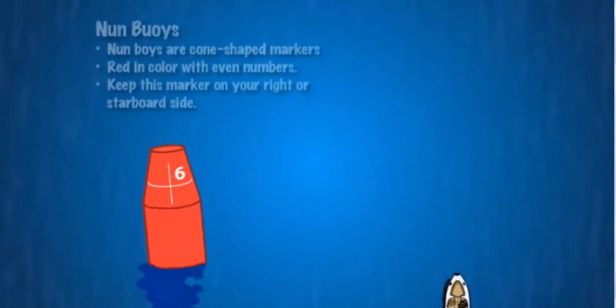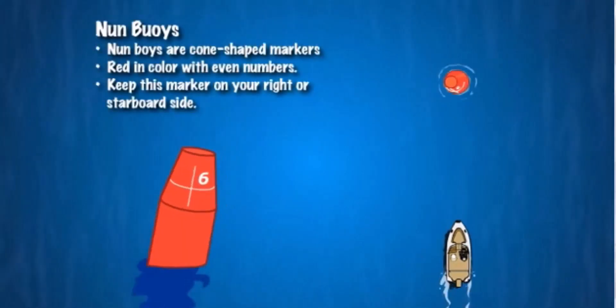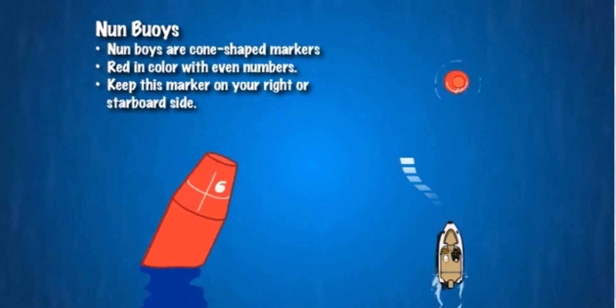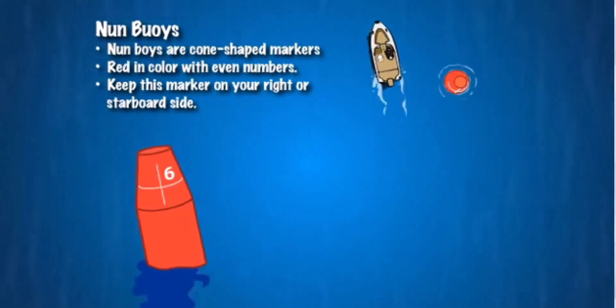Nun buoys are cone-shaped markers that are always red in color with even numbers. Keep this marker on your right or starboard side when proceeding in the upstream direction when returning from sea.